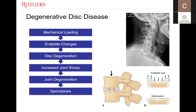Discs naturally degenerate with age due to changes in water content and end plate permeability. The exact mechanism for degenerative disc disease and how it causes pain is still being understood on a molecular level. Cyclical mechanical loading over time can lead to micro-fractures in the end plates, changing metabolic processes around the discs. These changes ultimately lead to disc degeneration and a decrease in disc height. When disc height decreases, the anterior column of the spine begins to fail and more stress is placed on the posterior column, leading to new bone formation as osteophytes, facet hypertrophy, and eventual spondylosis.